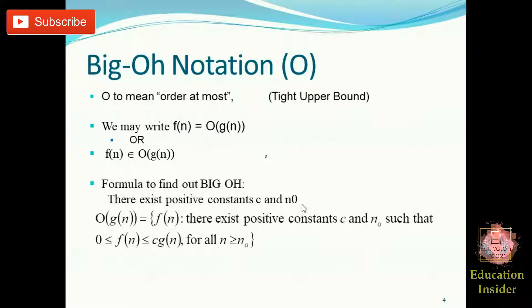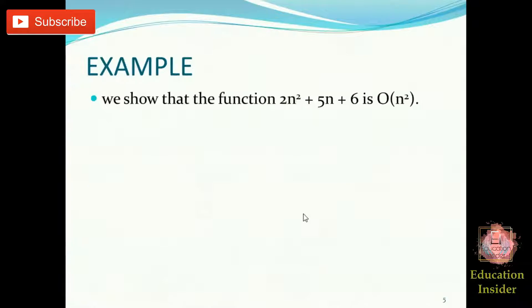We need to find out the values of c and n₀ to prove that a given function is bounded by Big O, Big Omega, or Big Theta. Things will get more clear after doing some examples. Let's move to example number one.